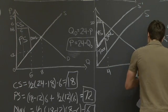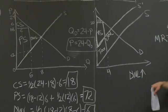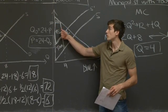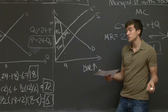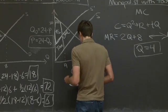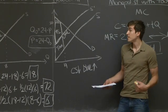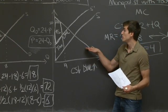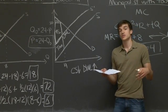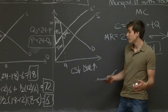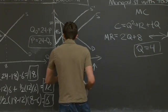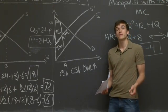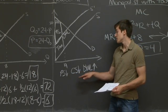Since deadweight loss is increasing, society is worse off. Consumer surplus is also decreasing because consumers pay a higher price for a lower quantity. And since the government is taking a share of producer profits, producers necessarily have less surplus — so producers are worse off too. Overall, the only party who might benefit from this policy is the government. Producers, consumers, and society are all worse off.